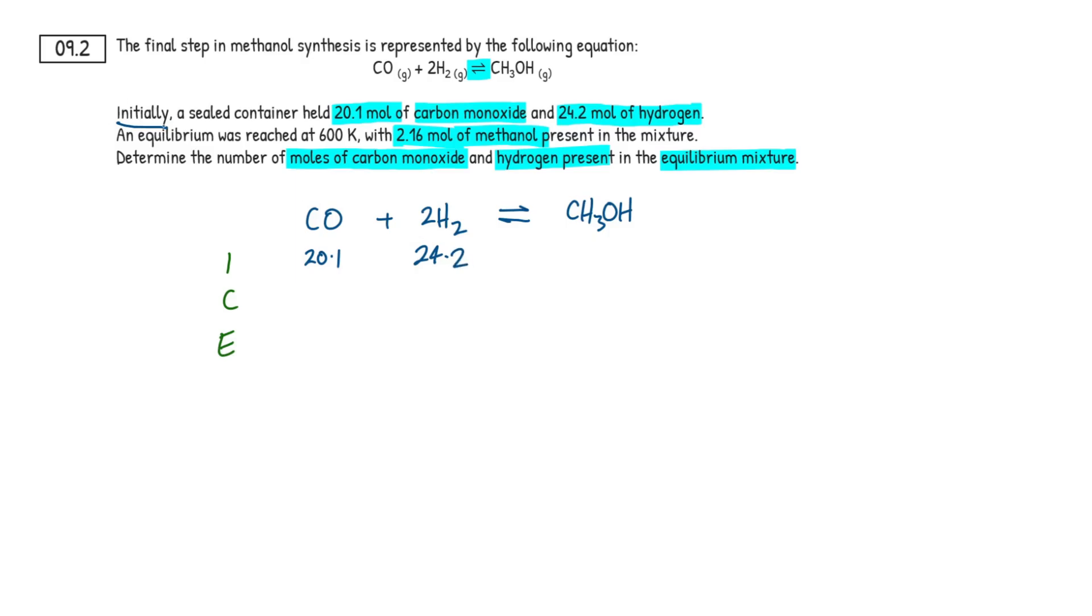And now we've switched away from initially, and it's instead telling us that at equilibrium, we have 2.16 mole of methanol present. So all the way down here at equilibrium, we have 2.16 mole.